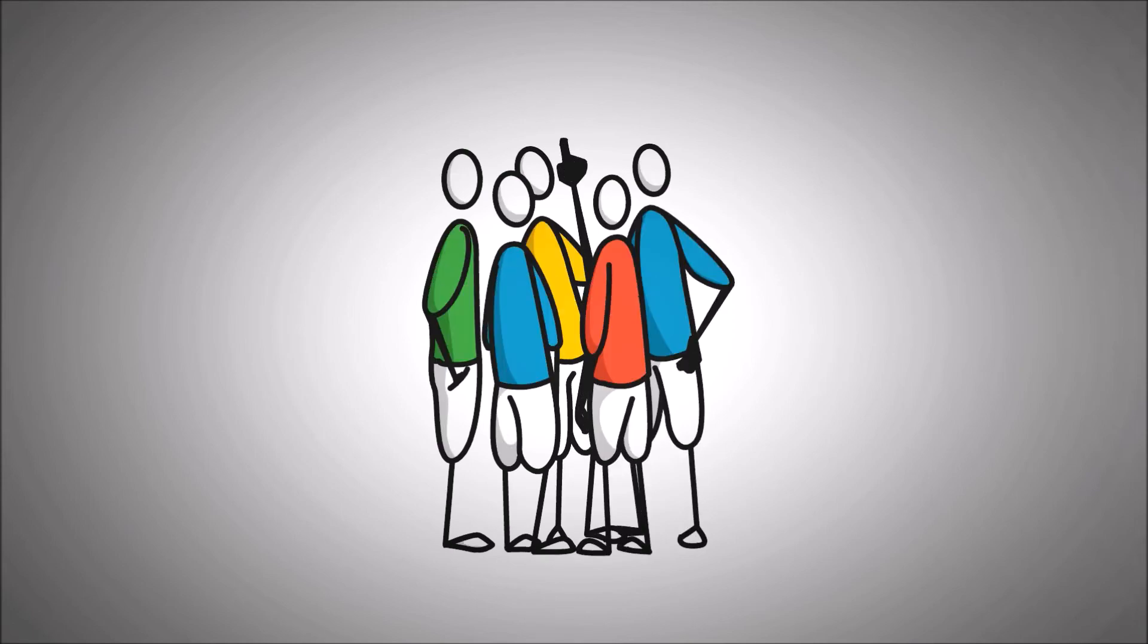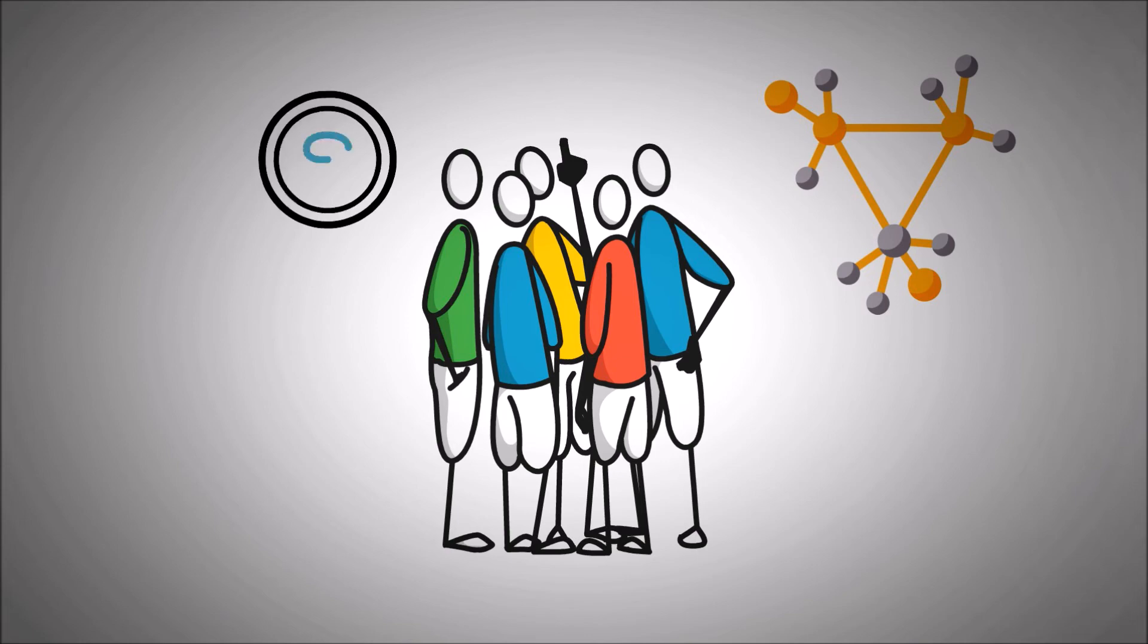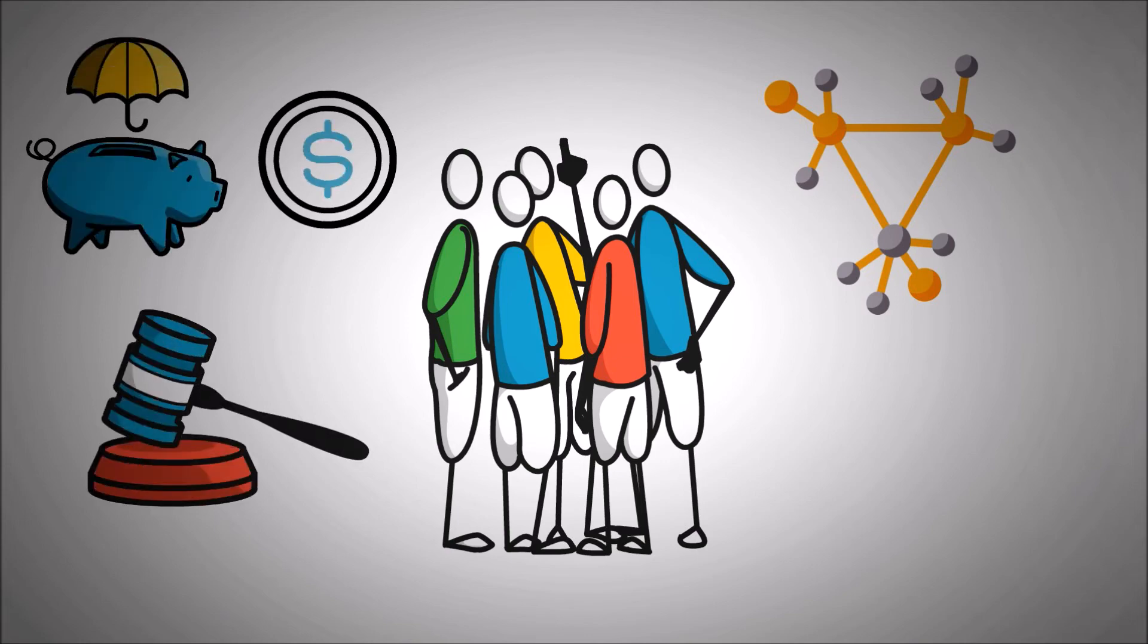Often, this is done by the community itself, which is set up as a DAO structure. In such a structure, holding the token associated with the insurance protocol gives you governance rights, meaning that you can participate in voting to accept or deny claims.